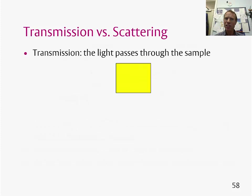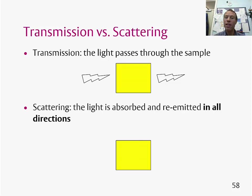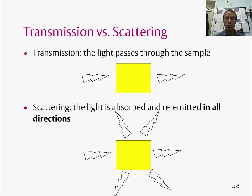Transmission is very different to scattering. In transmission, the light just goes straight through the sample — if light comes in from the left, it comes out of the right-hand side. If scattering happens, the light is absorbed and then re-emitted in all directions. This is a very important difference between transmission of light and scattering of light.